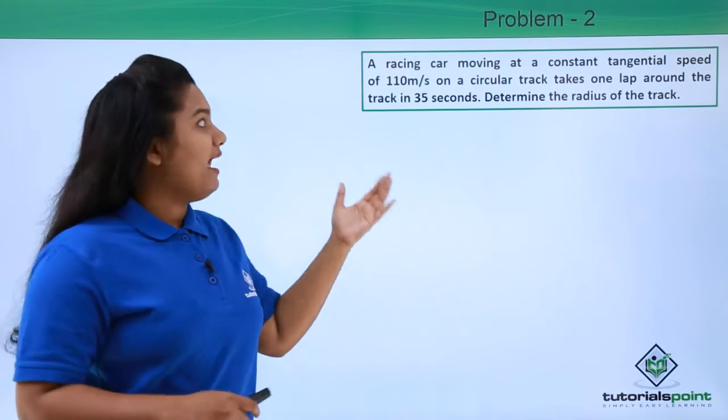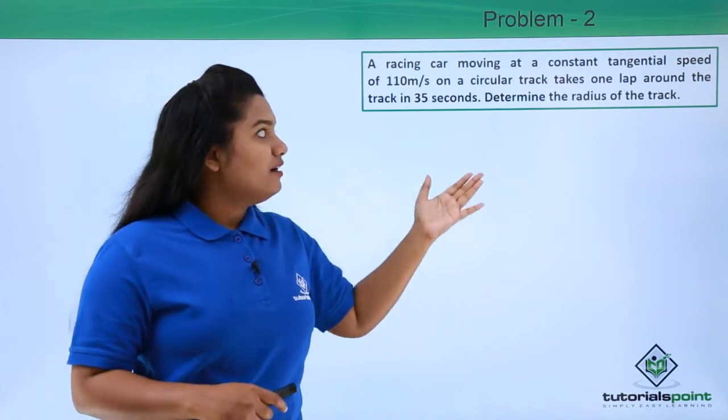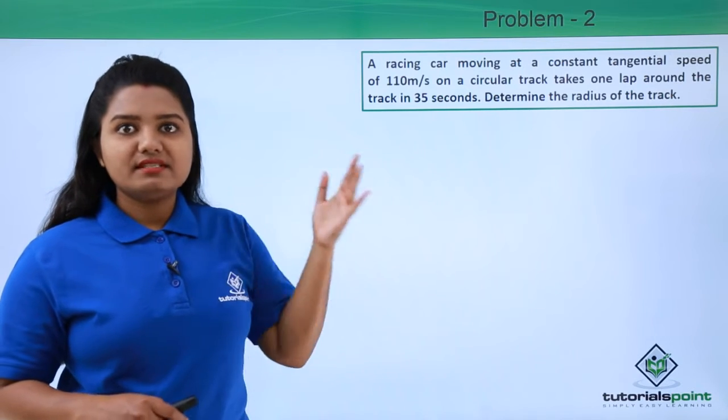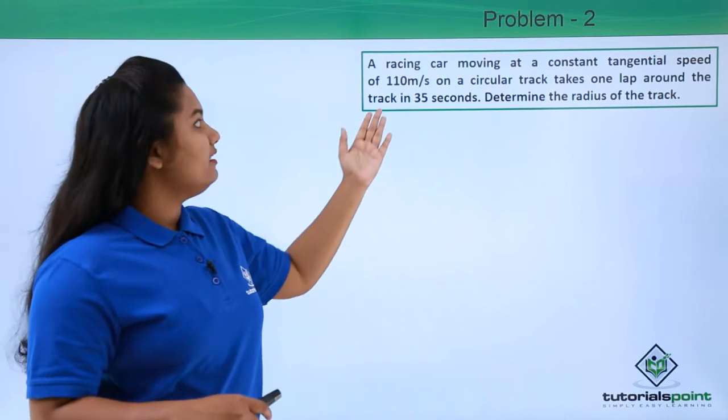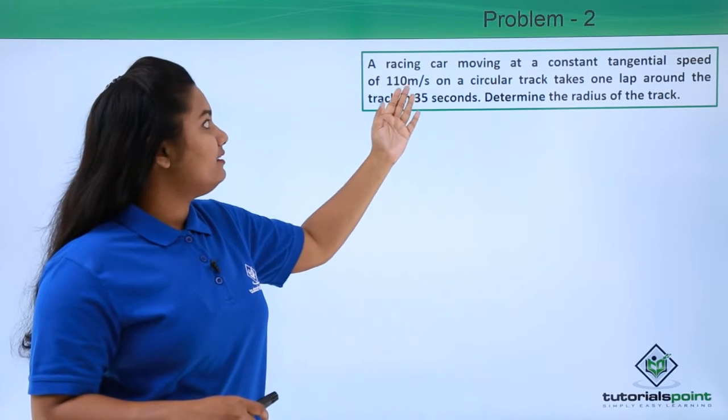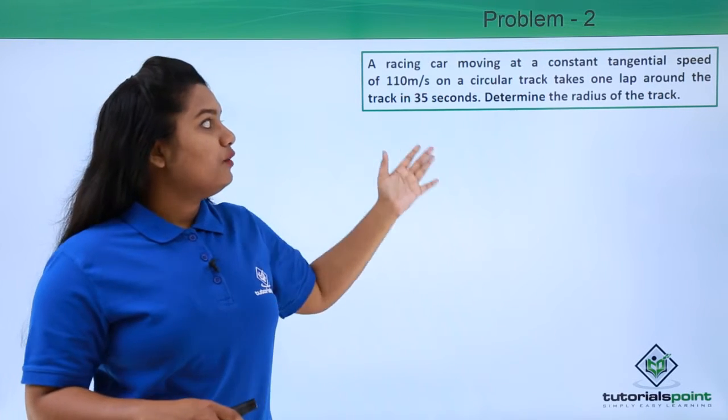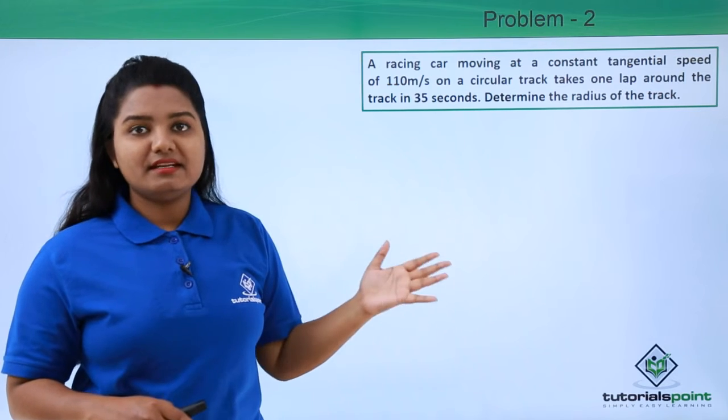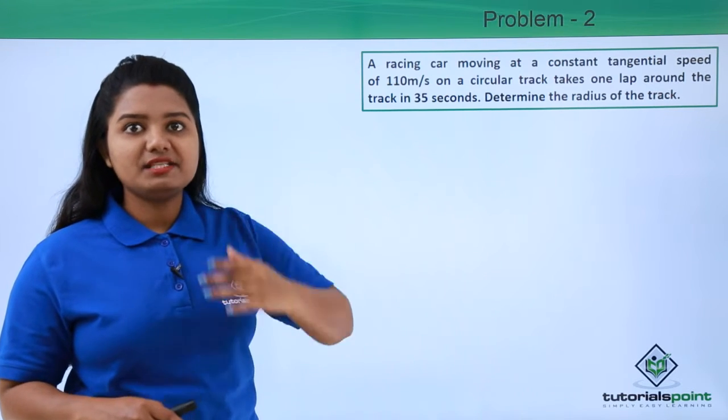So here we have a racing car which takes one lap around a circular path in 35 seconds with a speed of 110 meters per second. Now here the speed, that is the constant speed with which the car is moving, is referred to as the tangential speed since that speed is along the tangential direction.